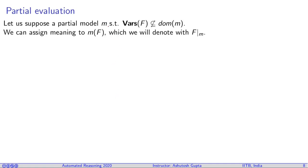Let us suppose you have a partial model M. Partial model M assigns values to few variables, not all. We can assign meaning to M of F. We will denote by F vertical bar M, which means F is projected using the model M.